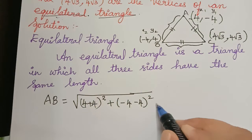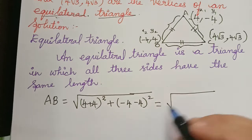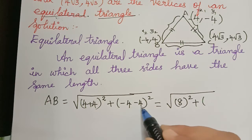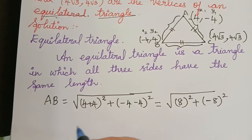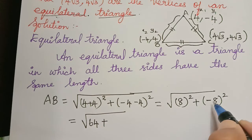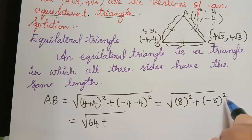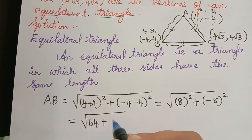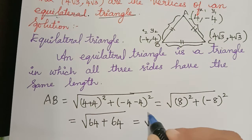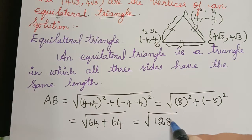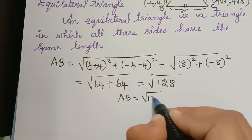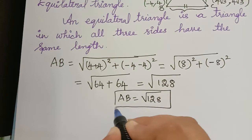So let me simplify this. This will be equal to √(8² + (-8)²) = √(64 + 64) = √128. When the negative sign is squared it becomes positive, so both terms give 64. Therefore the distance AB is equal to √128 units.